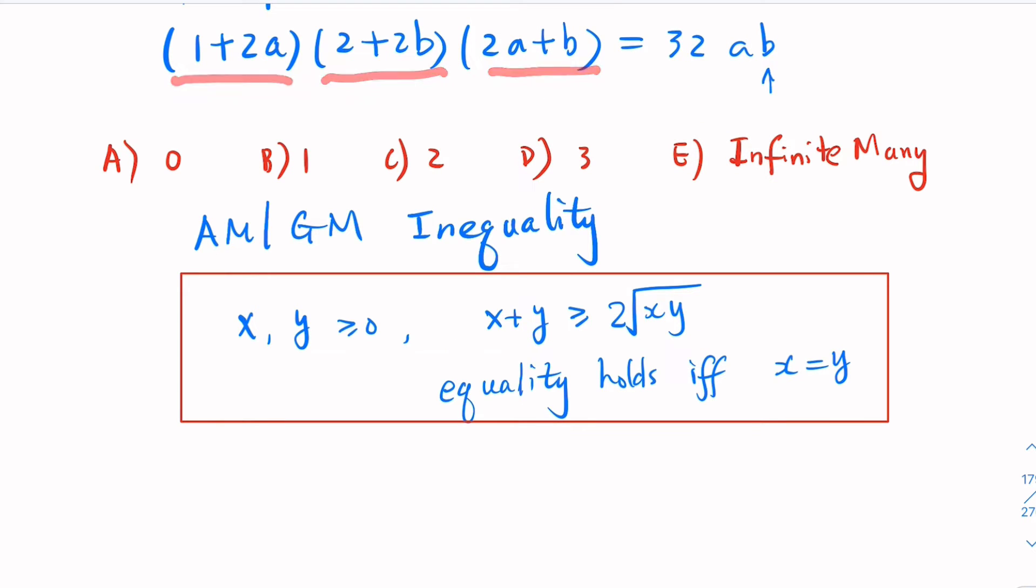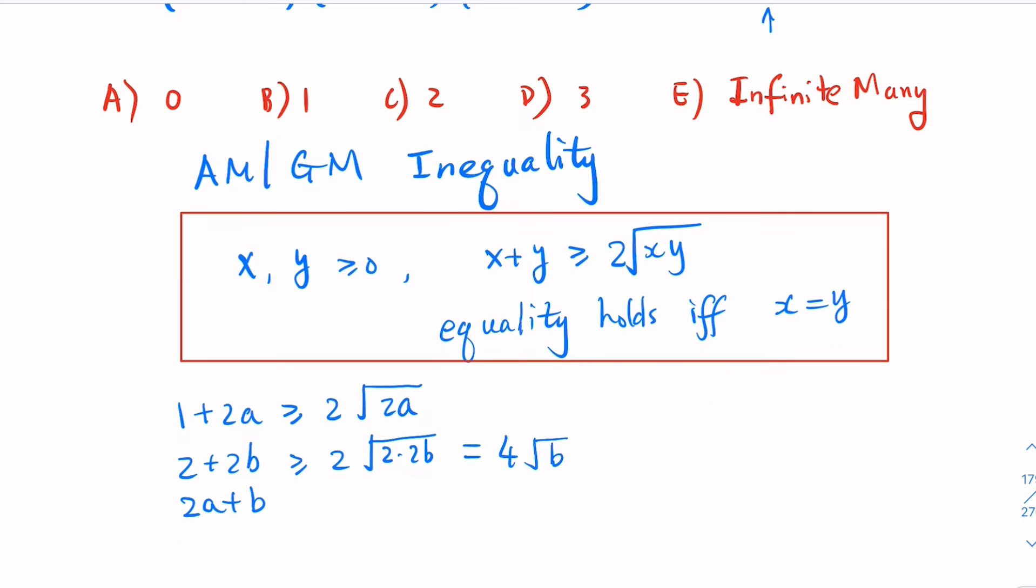Equality holds if and only if X and Y are equal. Let's apply this inequality to each of the terms on the left-hand side. So, 1 + 2A ≥ 2√(2A). And 2 + 2B ≥ 2√(2·2B) = 4√B. And the other term is 2A + B ≥ 2√(2AB).